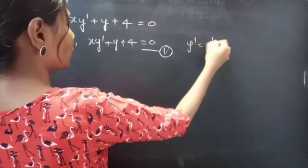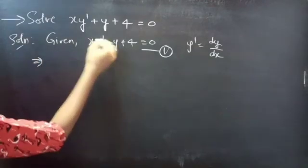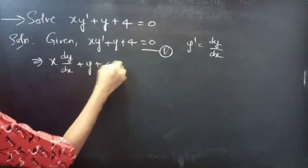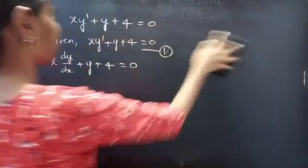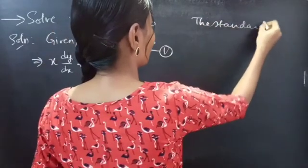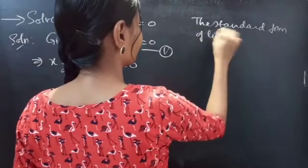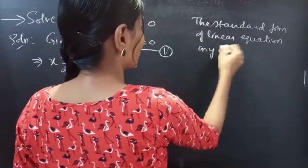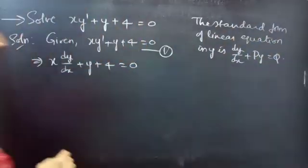We know that y' equals dy/dx. Now, replace y' by dy/dx and we'll get x·(dy/dx) + y + 4 = 0. We know that the standard form of linear equation in y is dy/dx + P·y = Q.